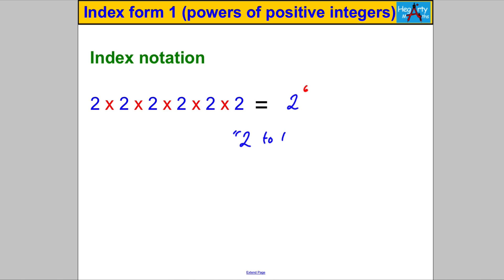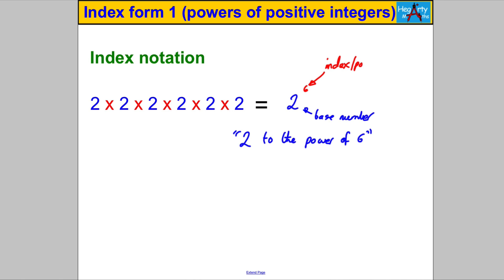The way they would say it: 2 to the power of 6. Now the number 2 has a special name — this is called the base number; it is the number getting multiplied by itself. The 6 has some different names: it may be called the index, it may be called the power, and sometimes it's even called the exponent. All of those just mean how many times the base number gets multiplied by itself.